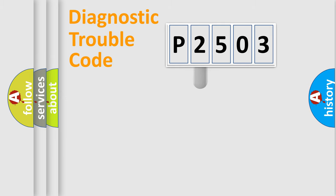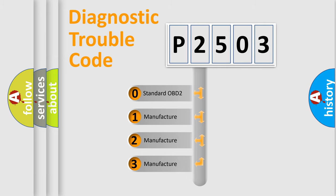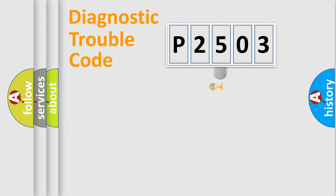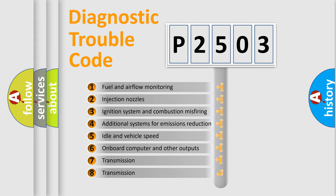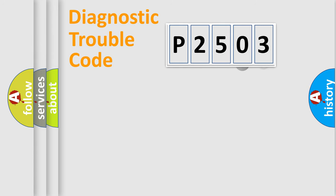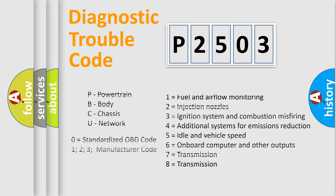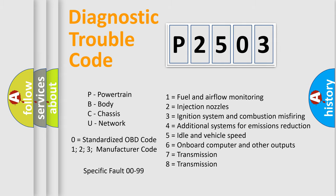This distribution is defined in the first character of the code. If the second character is expressed as zero, it is a standardized error. In the case of numbers 1, 2, or 3, it is a more specific car-specific error. The third character specifies a subset of errors, and only the last two characters define the specific fault of the group. This division is valid only when the second character is zero.